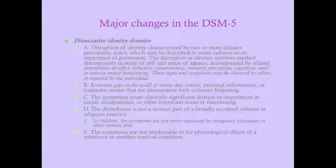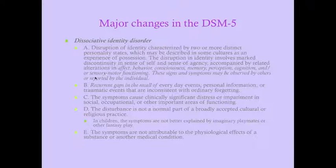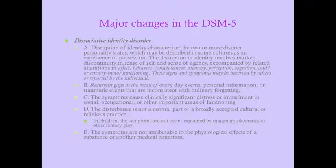For dissociative identity disorder according to DSM-5, you need to fulfill all criteria. Criterion A is a disruption of identity characterized by two or more distinct personality states, which may be described in some cultures as an experience of possession. This involves marked discontinuity in sense of self and sense of agency, accompanied by related alterations in affect, behavior, consciousness, memory, perception, cognition, and/or sensory-motor functioning. These signs and symptoms may be observed by others or reported by the individual.